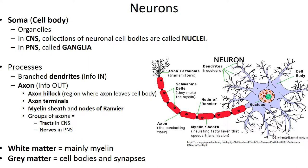Neurons have longevity — they can function for nearly a hundred years. They also have a high metabolic rate and cannot survive for more than a few minutes without oxygen, glucose, or ATP. Neurons can be very large; they are some of the largest cells in the body. They are also amitotic — most central nervous system neurons lose their ability to divide after they assume the role as communication lines.